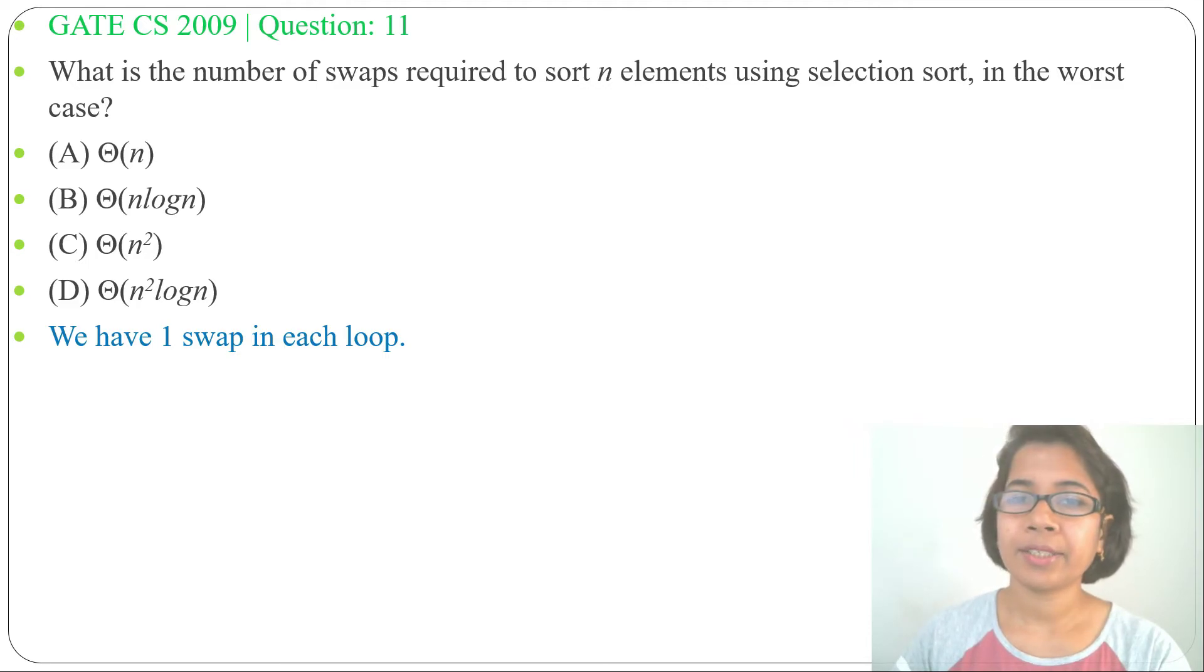As in the last iteration, it will be automatically sorted. We don't need to sort the last element, that will be automatically sorted. There are n minus one iterations and in every iteration just one swap. So there are n minus one swaps.